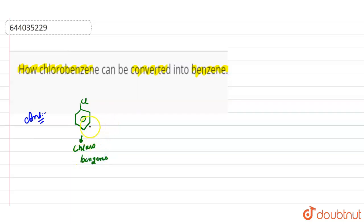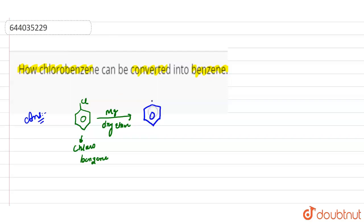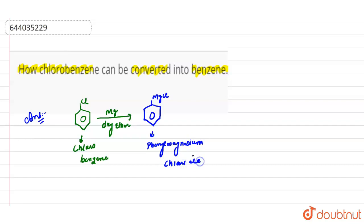When chlorobenzene reacts with Mg in the presence of dry ether, we get the Grignard reagent — that is, a benzene ring having MgCl. This product is known as phenyl magnesium chloride.